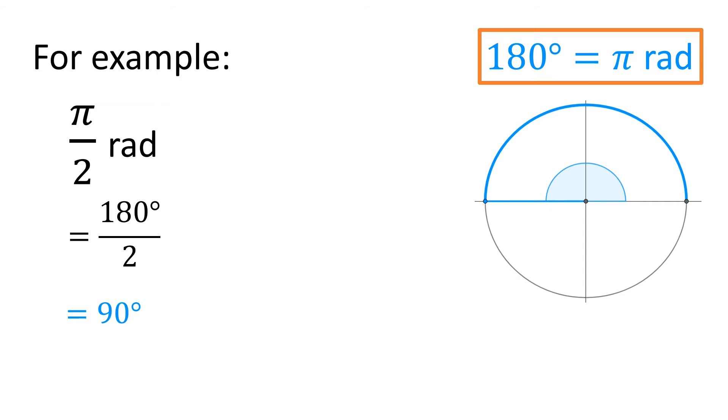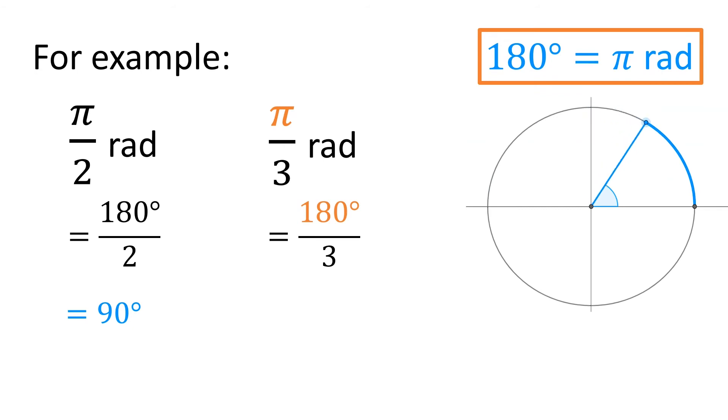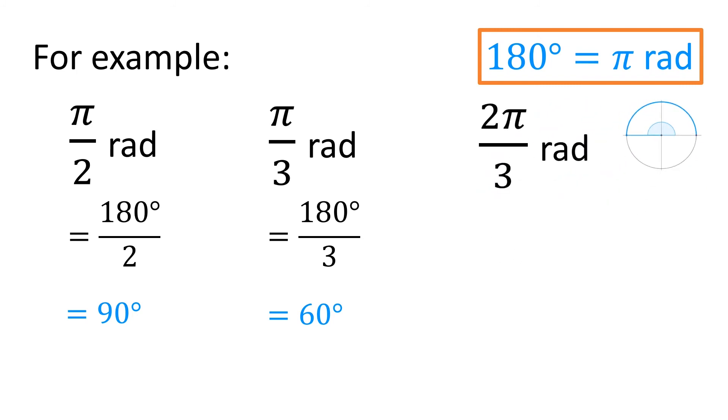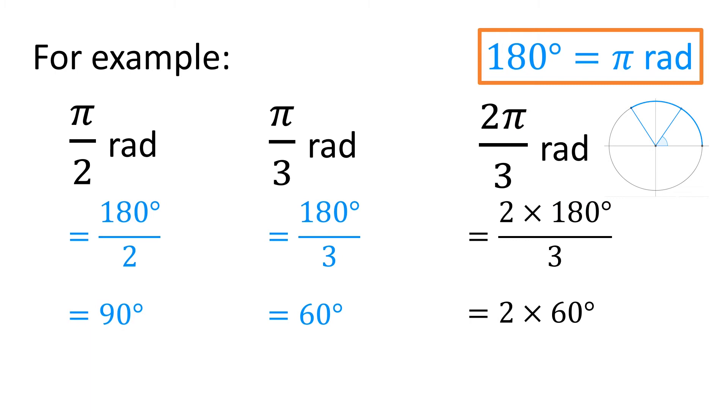π/3 radians would be 180 divided by 3, or 60 degrees. 2π/3 radians would be 2 times 60 degrees, 120 degrees.